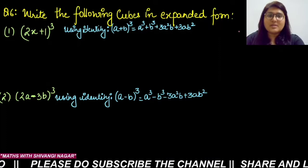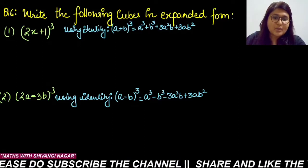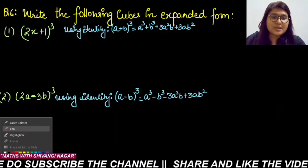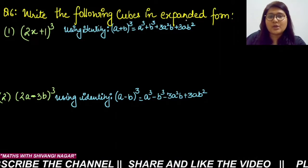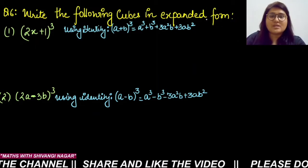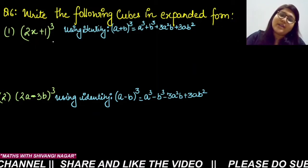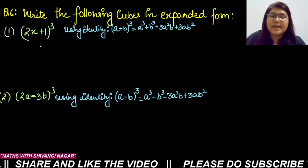Now Question 6: write the following cubes in expanded form. For a binomial cube, we use either (a + b)³ or (a - b)³ identity depending on the sign in the middle.